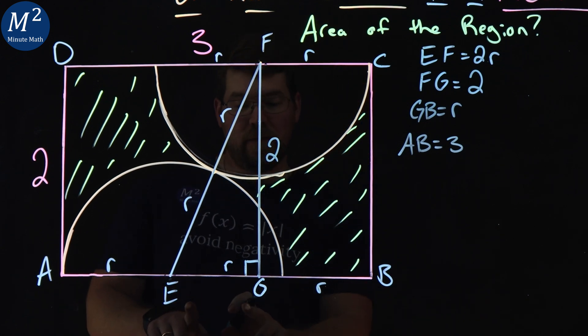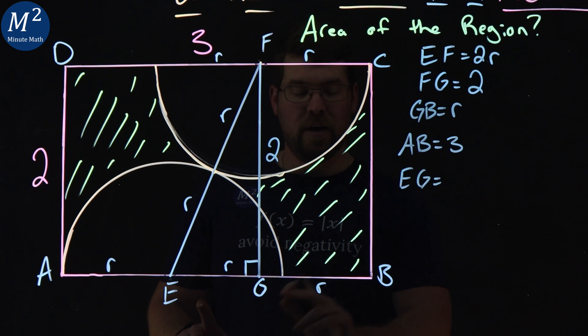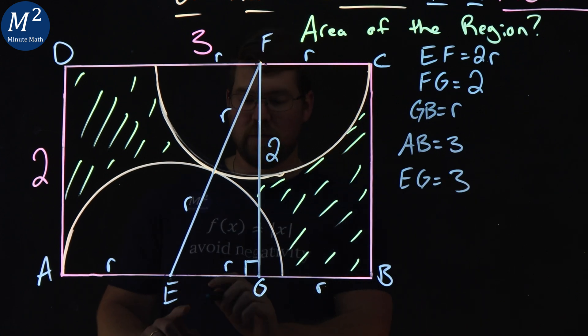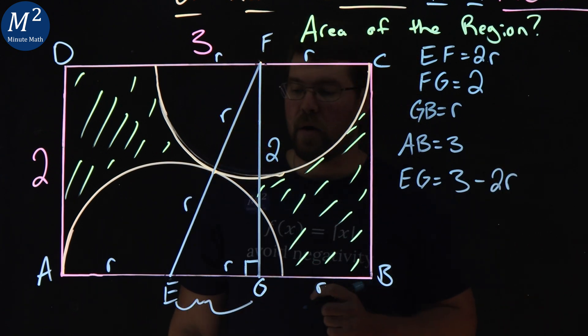And so, if you find the length of just EG, that's going to be the length of 3 minus 2 of these Rs. And we're just going to find that length right here minus a 2R.